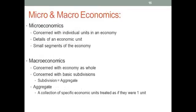Difference between micro and macro: microeconomics is concerned with individual units in an economy — the details of a specific economic unit, very small segments of the economy, like an individual business, the market for an individual business, or an individual's tax return. Macroeconomics is very different. It's concerned with the economy as a whole. It's concerned with basic subdivisions, known as aggregates. An aggregate is a collection of specific economic units treated as if they were one. So macroeconomics doesn't look at the unemployment of one person — they look at the unemployment of the entire country, and that's how we get the unemployment rate.